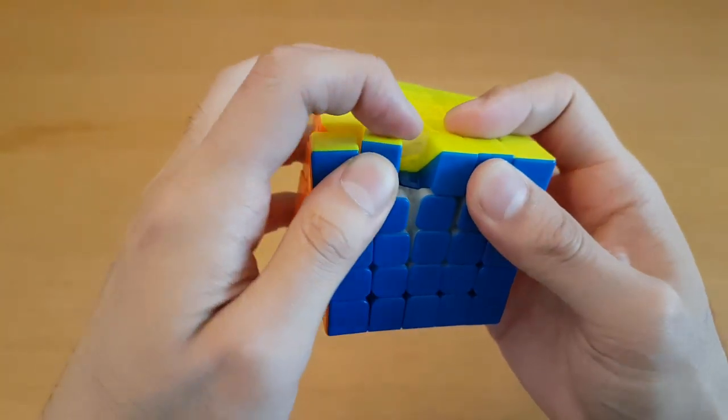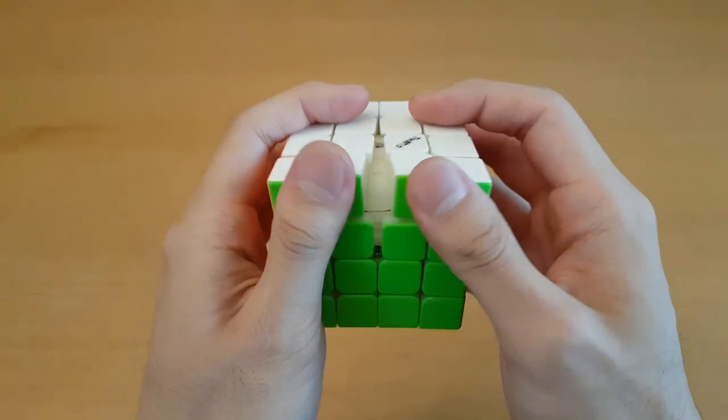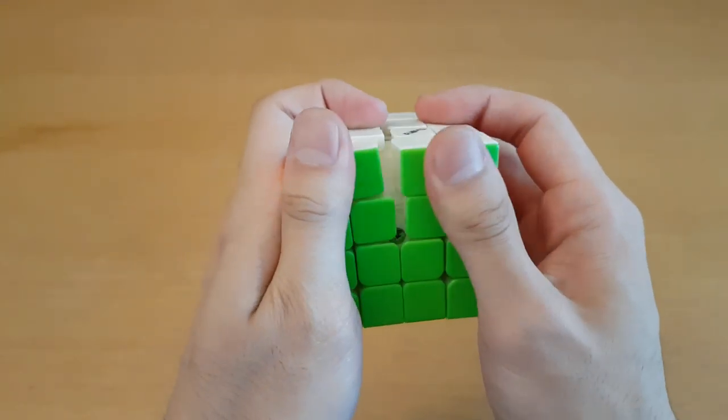So we have the colored plastic here on the outer pieces, but on the center pieces we have primary internals. And in contrast, the Valk 4 has completely primary internals.